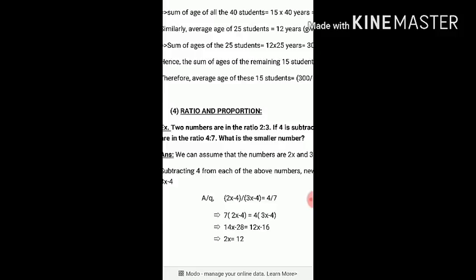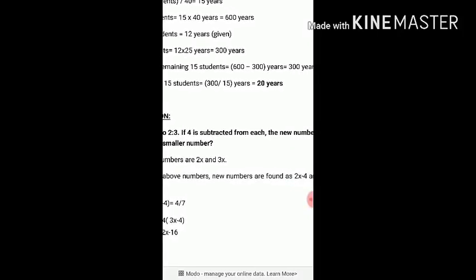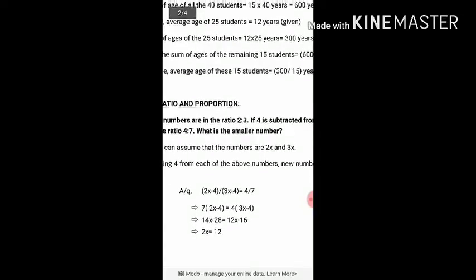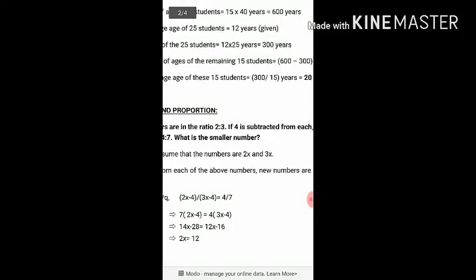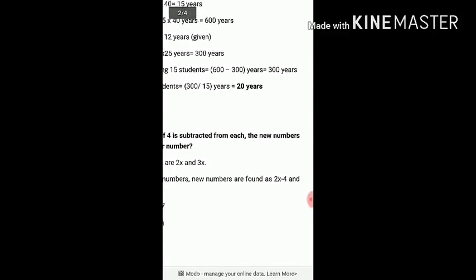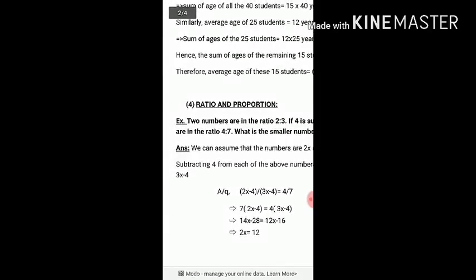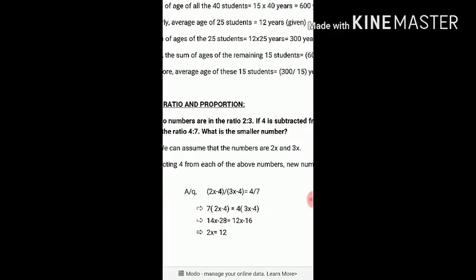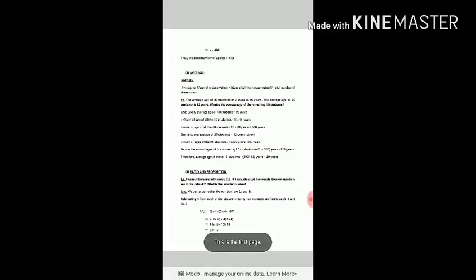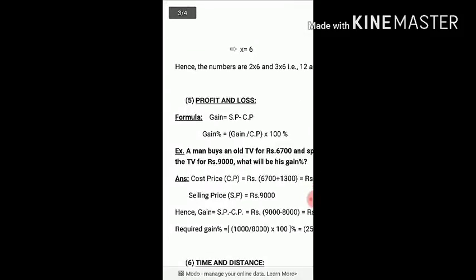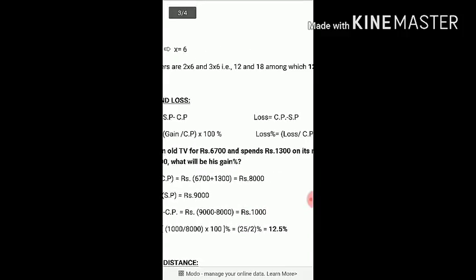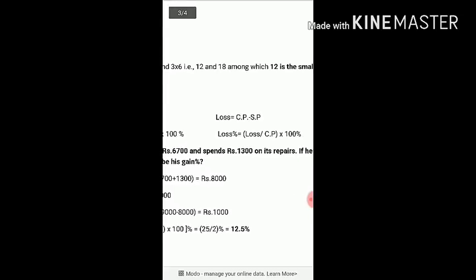Suppose the numbers are 2x and 3x. The second part of the question states: if 4 is subtracted from each number, the new ratio becomes 4 to 7. So the equation is: (2x minus 4) divided by (3x minus 4) equals 4 by 7. Solving this, 2x equals 12, so x equals 6. Therefore the two numbers are 2x equals 12 and 3x equals 18. The smaller number is 12.